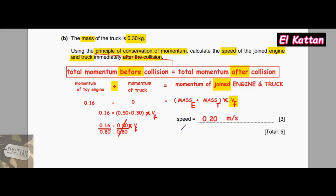Finally, the speed is 0.20 meters per second. To check your marks, one mark for the principle of conservation of momentum, whether as an equation or in words or symbols, one mark for the substitution, and one more mark for the final correct answer with the correct unit. So you get 3 out of 3.